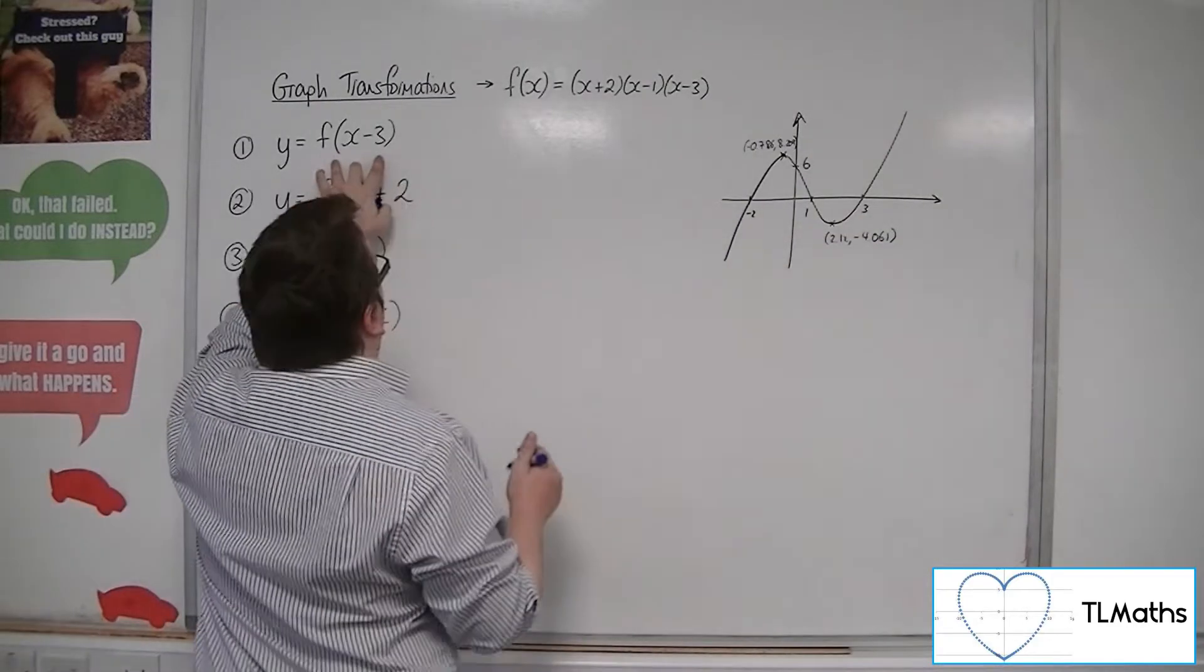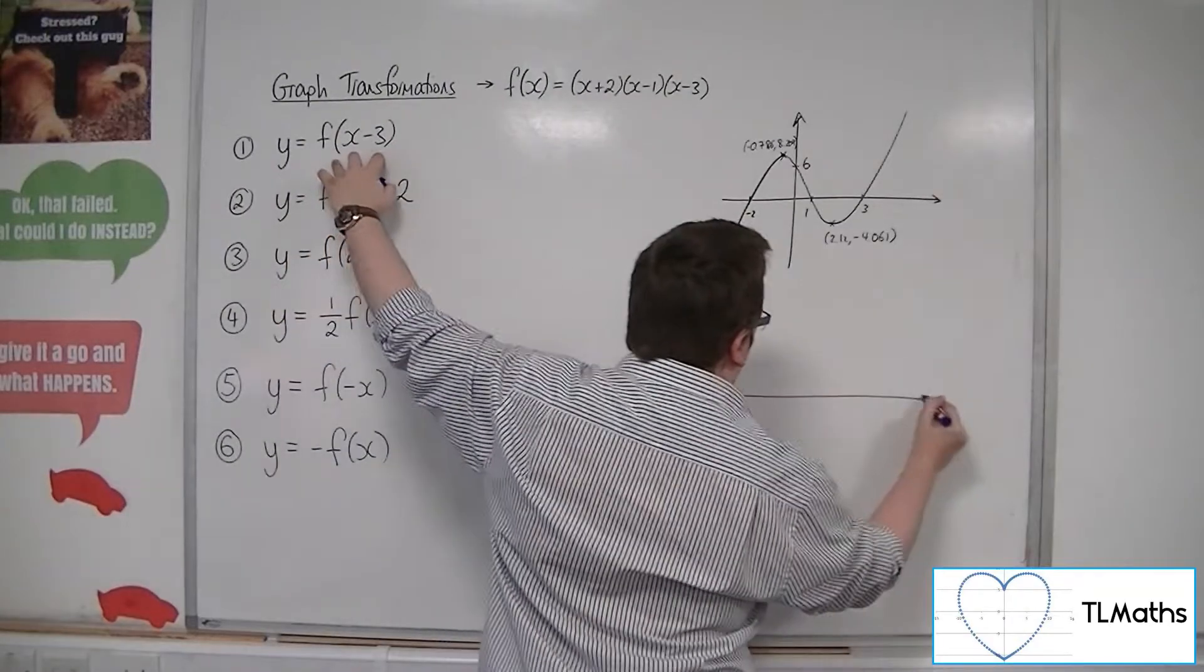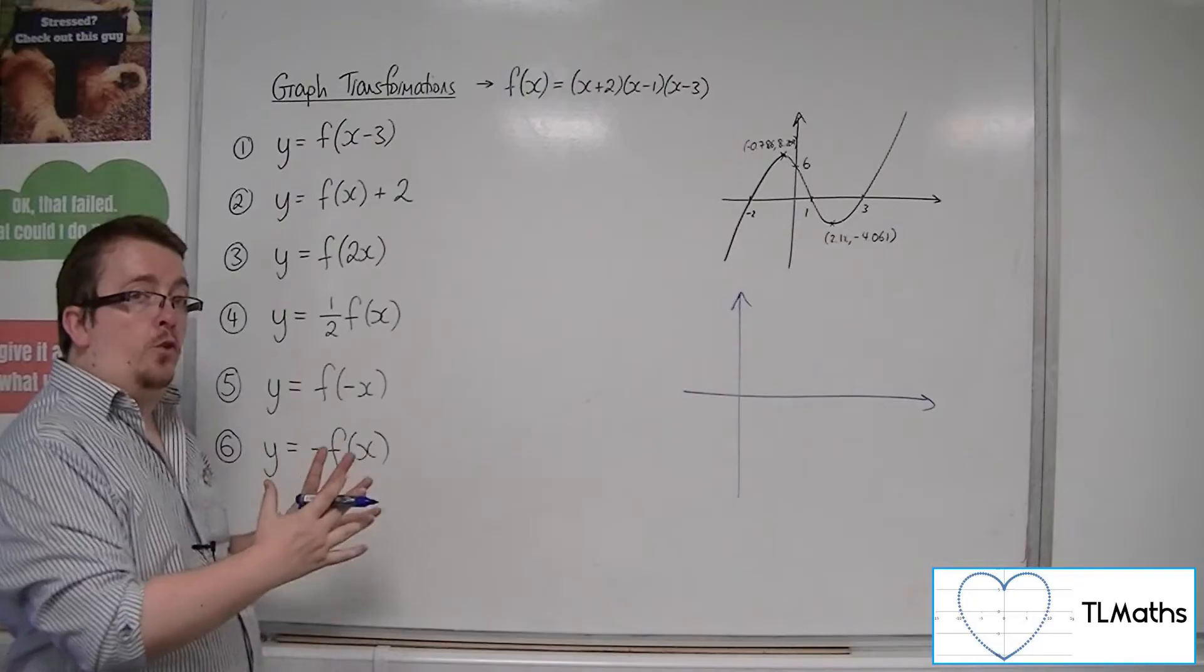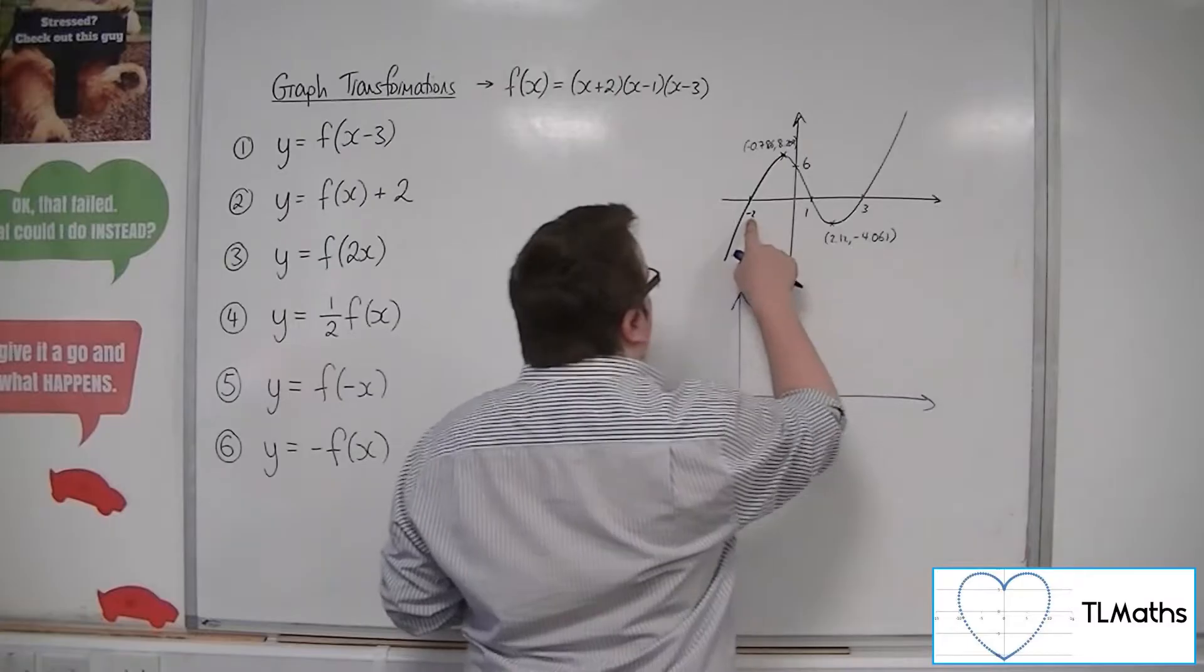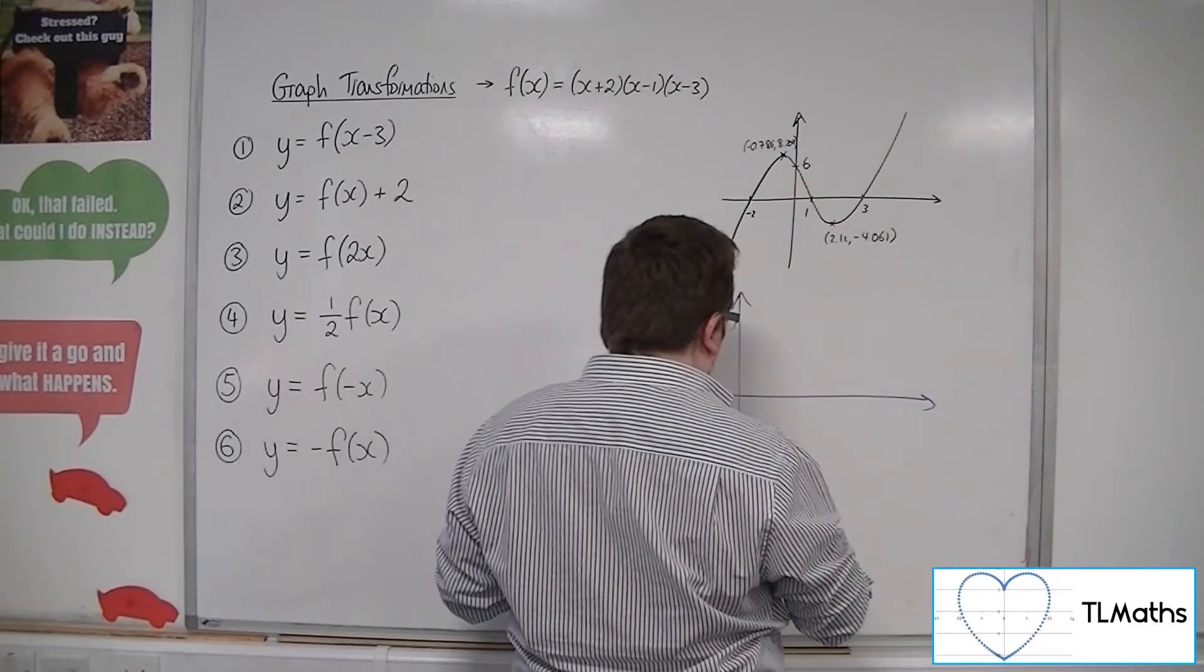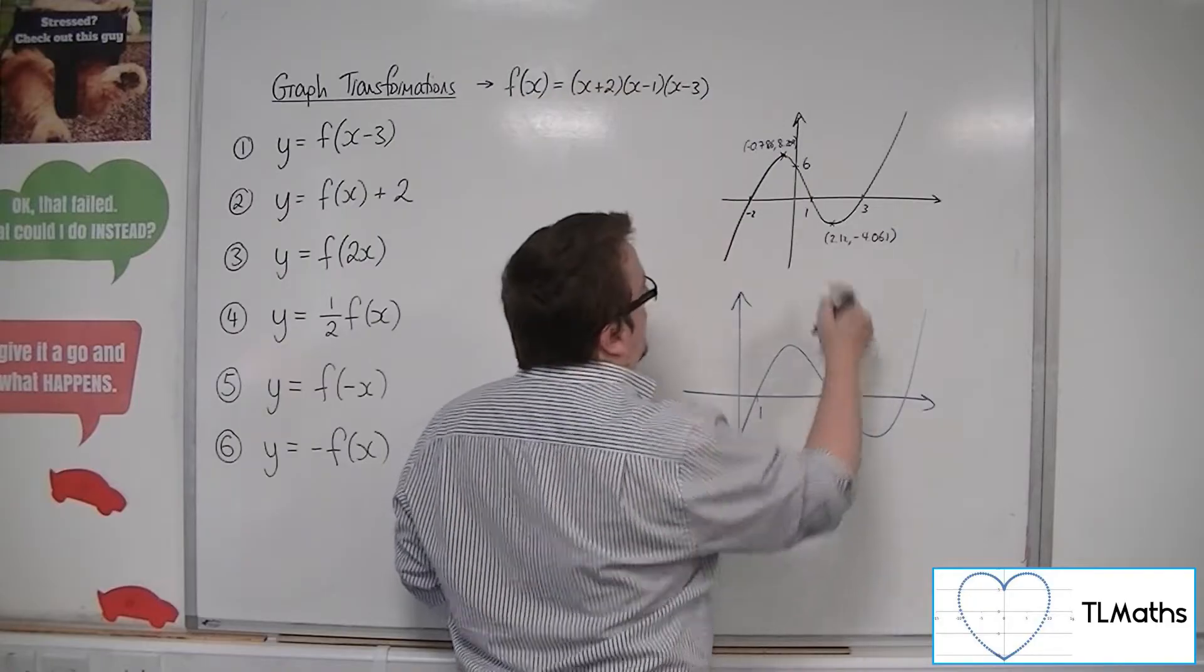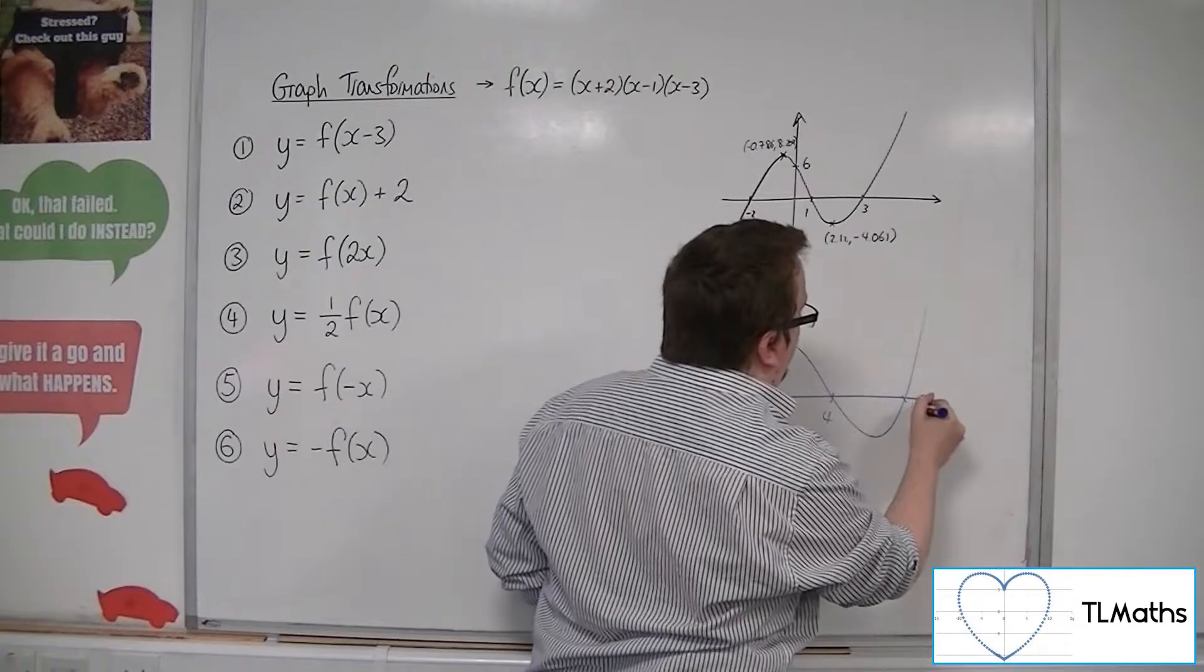So f(x-3), let's have a look at that one. That would be a translation by the vector (3,0), so it's going to move all the points 3 to the right. So -2 will now be at 1. So this curve will look something like this, because now it will be going through 1, this point will now be going through 4, and that will be 3+3, so 6.